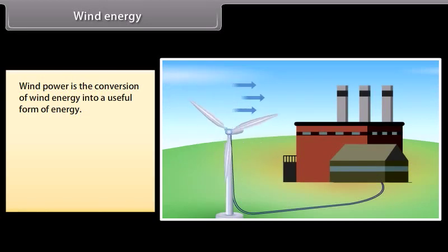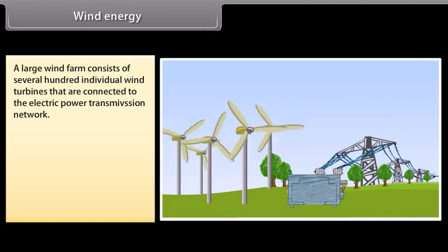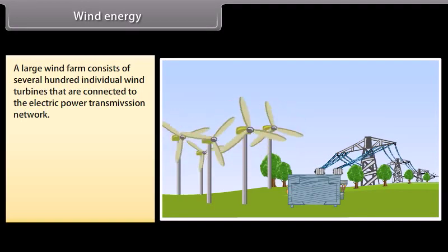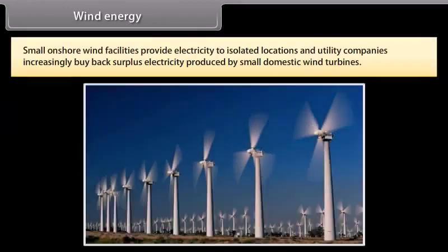Wind energy. Wind power is the conversion of wind energy into a useful form of energy using wind turbines to make electricity, windmills for mechanical power, wind pumps for water pumping or drainage, or sails to propel ships. A large wind farm consists of several hundred individual wind turbines connected to the electric power transmission network. Offshore wind farms harness more frequent and powerful winds than land-based installations, with less visual impact on the landscape, but construction costs are considerably higher. Small onshore wind facilities provide electricity to isolated locations, and utility companies increasingly buy back surplus electricity produced by small domestic wind turbines.